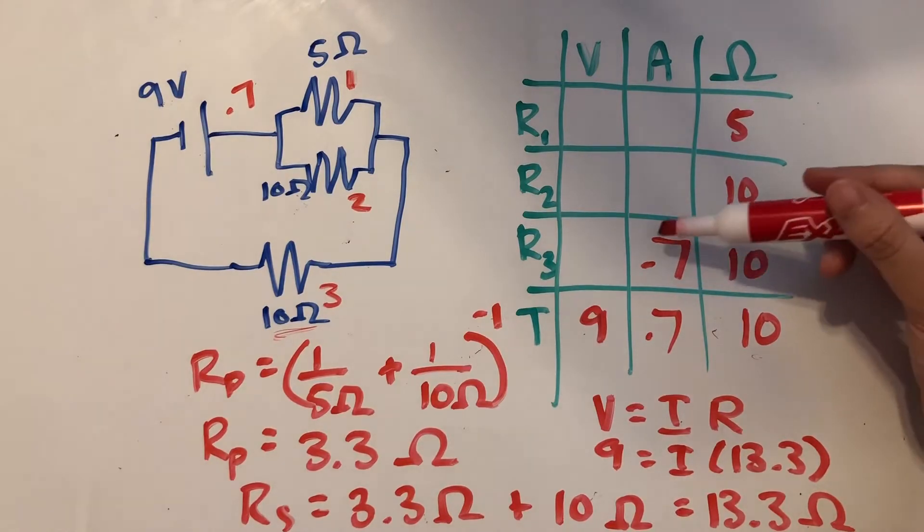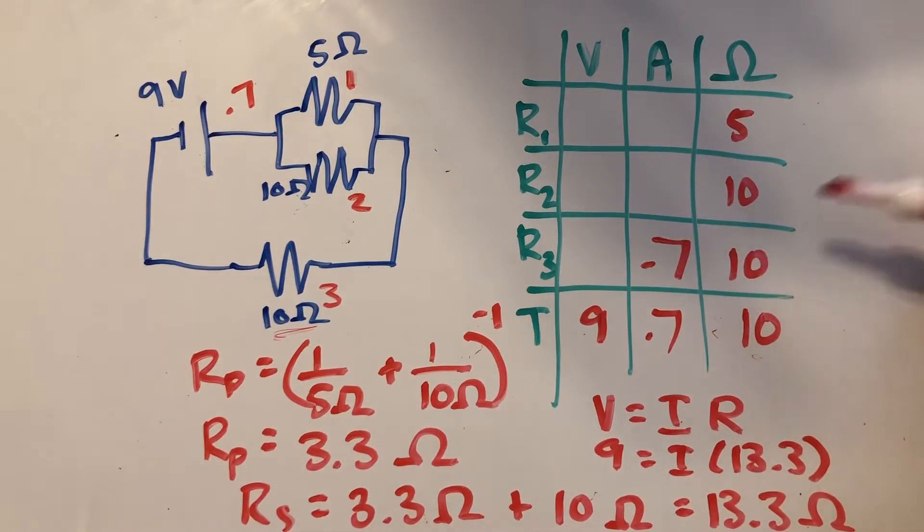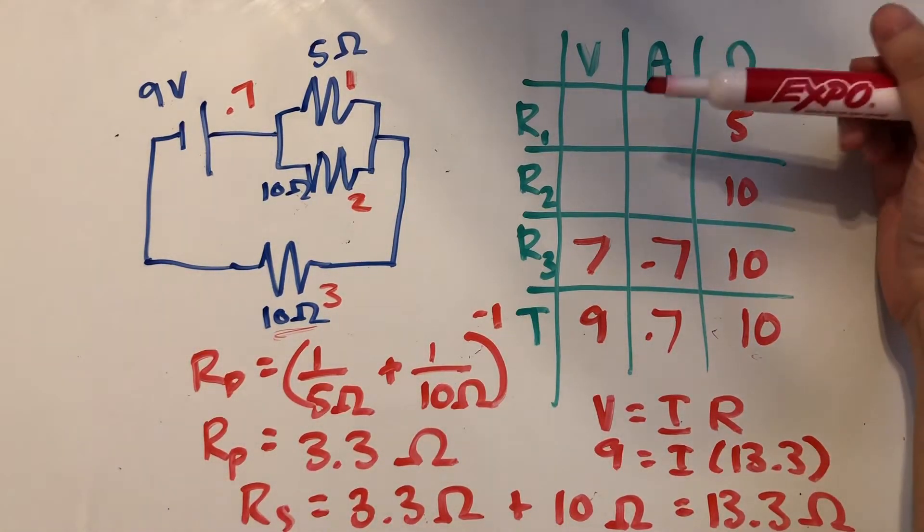So 0.7, which is the current, times 10, which is the resistance, will give us 7 for the voltage here. Now let's try to use Kirchhoff's loop rule to find the voltages for resistors 1 and 2.